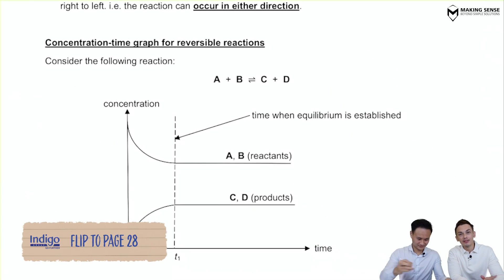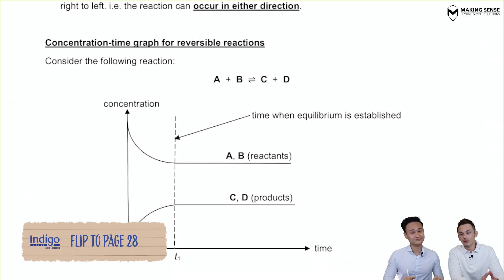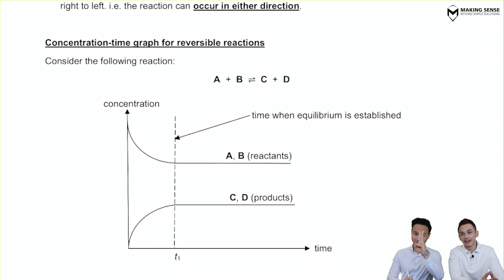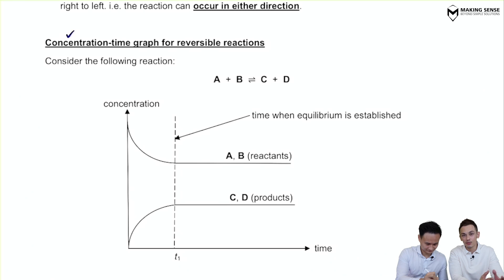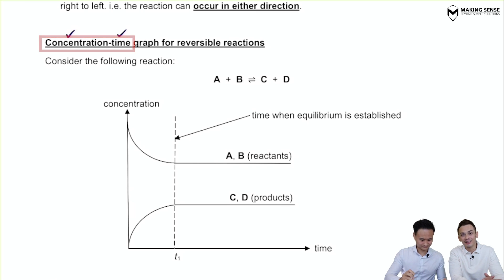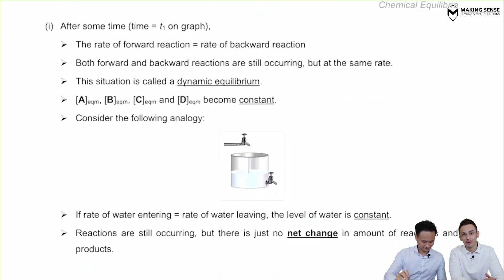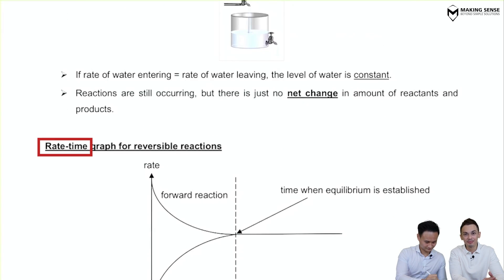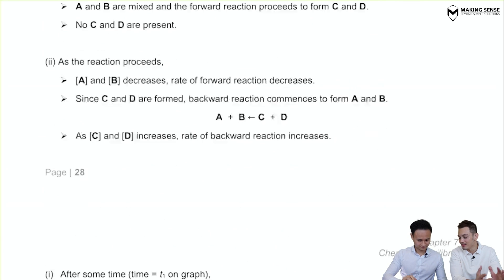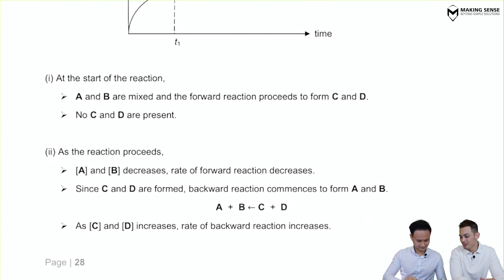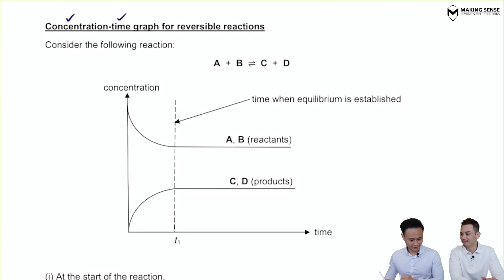Looking at the first concept where we talk about graphs, remind yourself that there are two major axes we look at. The first axis is concentration against time, and the second axis is rate against time. Let's go through the first one: concentration against time.